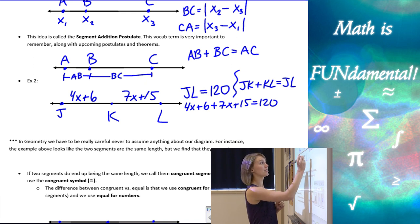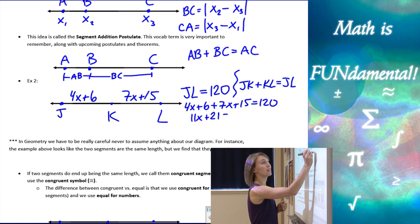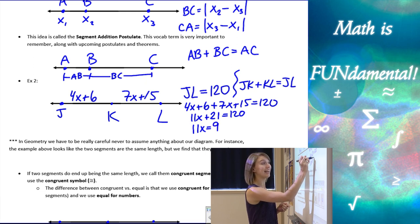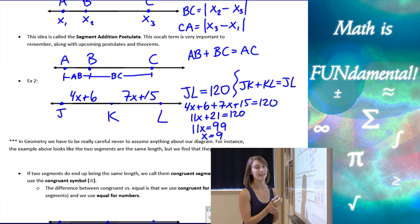So here I have 4X plus 7X gives me 11X. 6 plus 15 is going to be 21 equals 120. I can subtract 21 from 120, and I have 11X equals, let's see, 99. And so X is 9. 11 times 9 is 99.